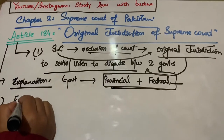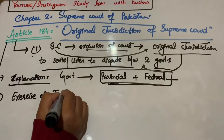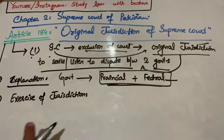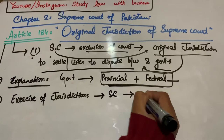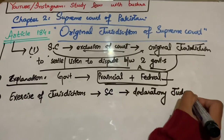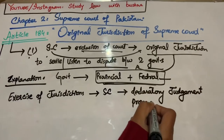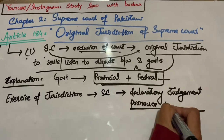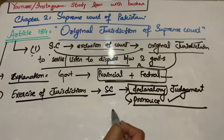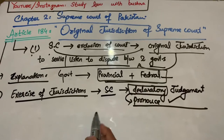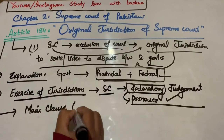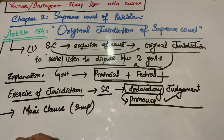Clause 2 کہتی ہے کہ اپنی jurisdiction کو استعمال کرتے ہوئے، Supreme Court جب اپنا judgment دے گی تو وہ judgment declaratory ہوگی — یعنی Supreme Court declaratory judgment دیتی ہے۔